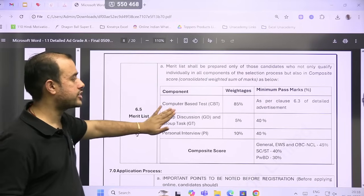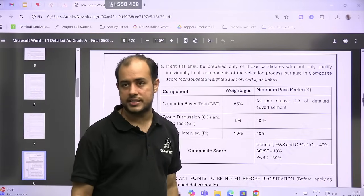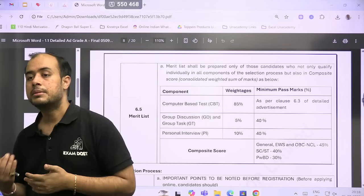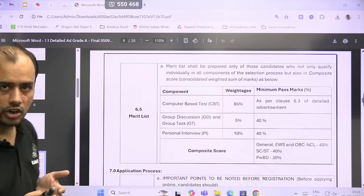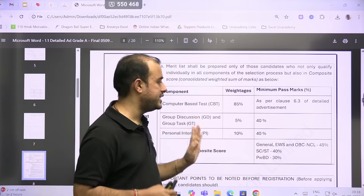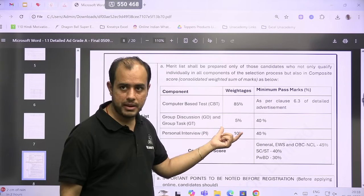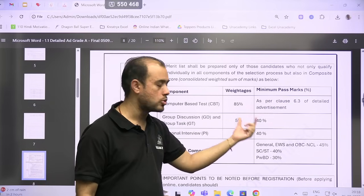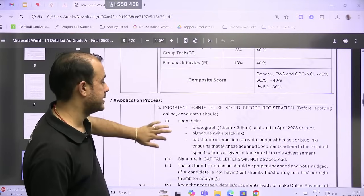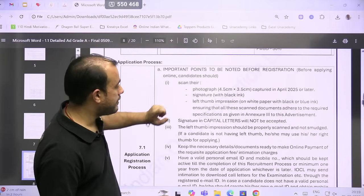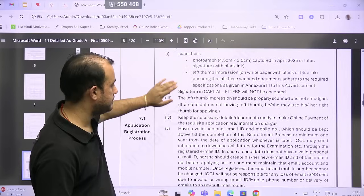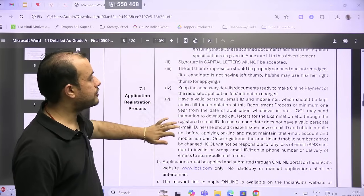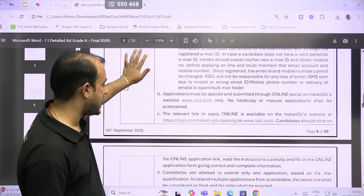Now, for the final selection, CBT holds 85 percent weightage—that means your marks out of 100 will be converted to 85 directly by multiplying with a factor of 0.85. Then 5 percent for GD and GT—that means 5 marks, out of which 2 marks is the minimum passing marks. For PI, 10 marks, out of which 4 marks are minimum required. So you should have a scanned photograph, signature, left thumb impression. Signature in capital letters will not be accepted; left thumb impression should be properly scanned.